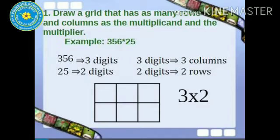Draw a grid that has many rows and columns as the multiplicand and the multiplier. Example 356 into 25. Here 356 is a 3 digit number. So we have to draw 3 columns. 25 is a 2 digit number. We have to draw 2 rows.